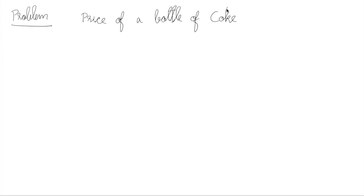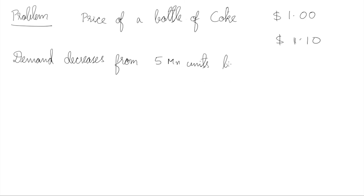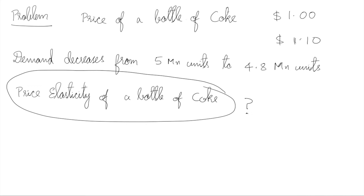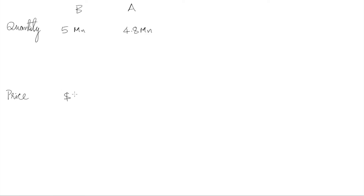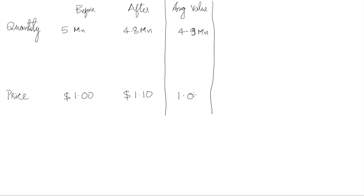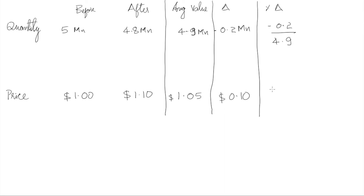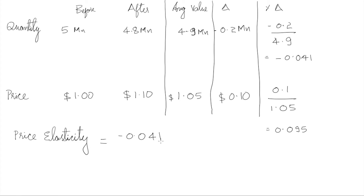Let's take a problem. The price of a bottle of Coke, which was $1, changes to $1.10. The demand decreases from 5 million units to 4.8 million units. To find the price elasticity, figure out the quantity before and after, the price before and after per unit, and the average of both quantity and price. Then calculate the change — after price minus before price — take it as a ratio of change versus average value, and divide quantity by price to get the price elasticity.